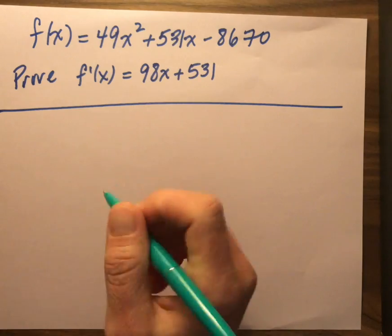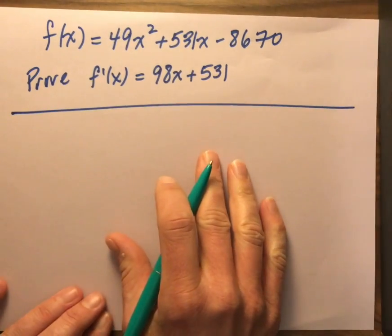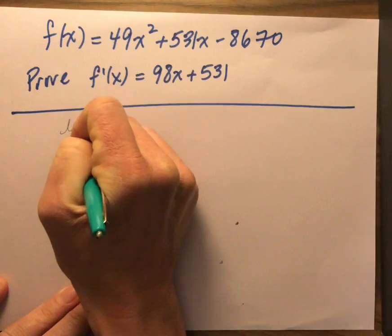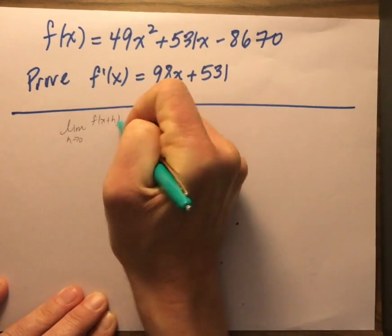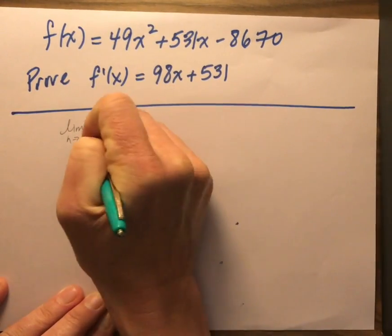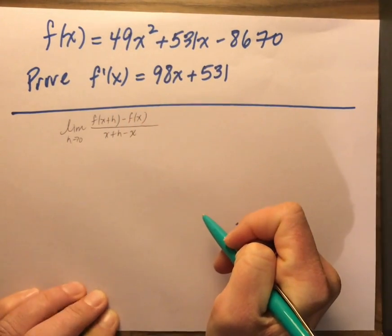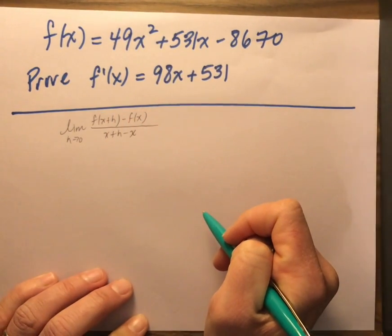So to get going here, I'm going to say the limit as h goes to 0, f of x plus h minus f of x, all over x plus h minus x, my change in y over my change in x, the slope of the secant line.